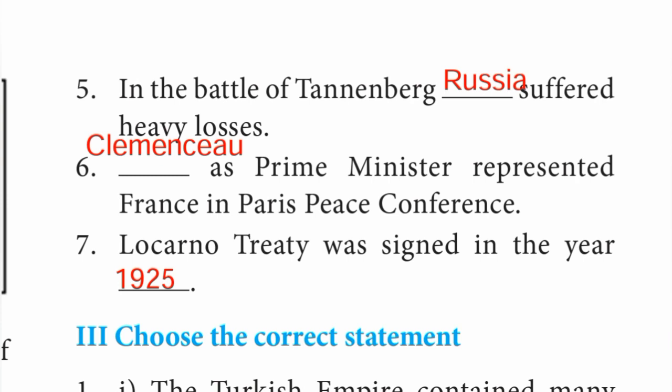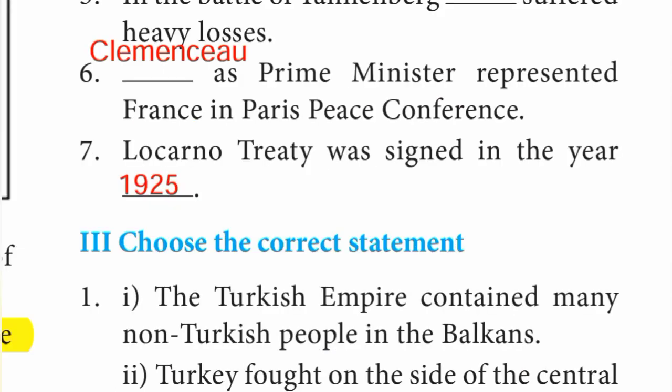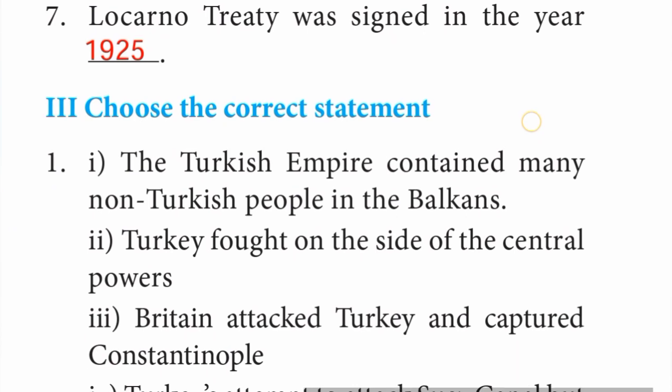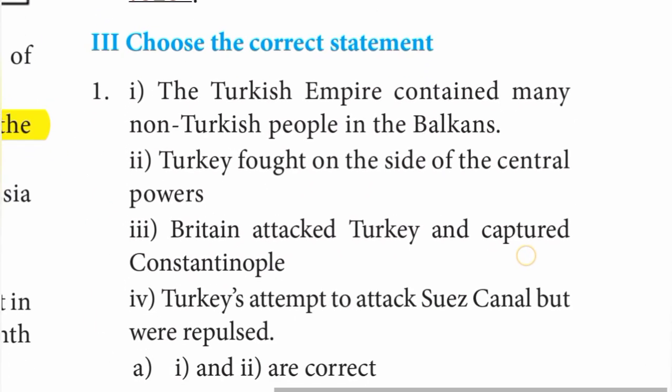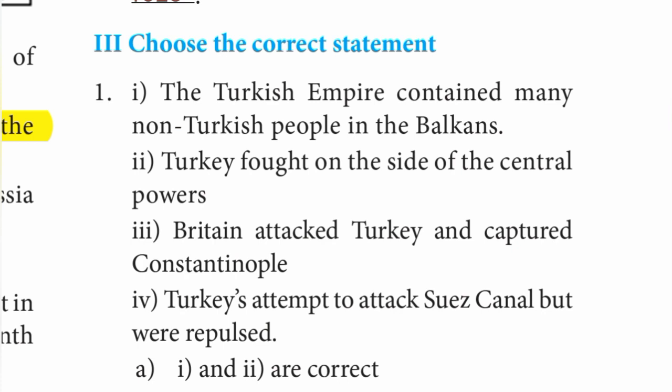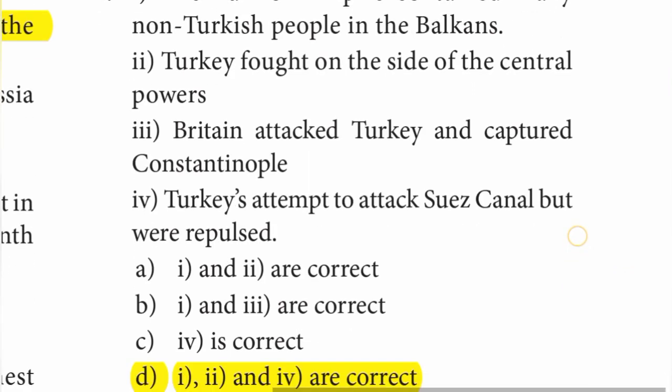Moving to Roman number 3 — choose the correct statement. First one: the Turkish Empire contained many non-Turkish people in the Balkans — correct. Turkey fought on the side of the central powers — correct. Britain attacked Turkey and captured Constantinople — this is wrong. Turkey's attempt to attack Sirius was repulsed — correct. D option — statements 1, 2 and 4 are correct — D option is the right answer.